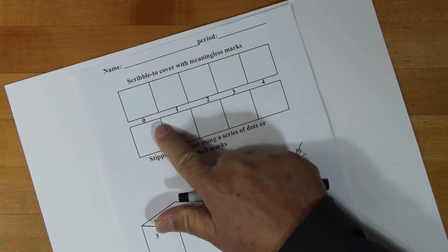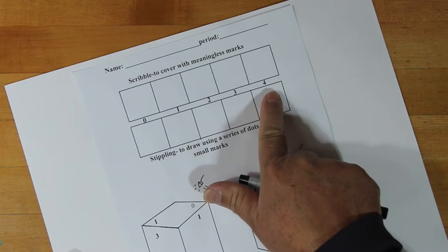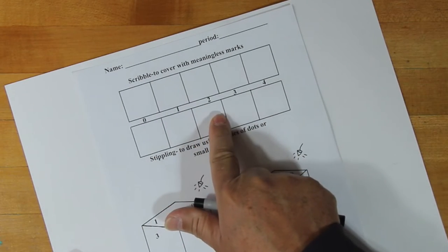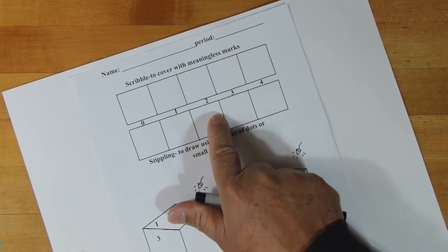Just like before, we're going to be looking at our value scale, and we're going to be using these two different techniques in order to create different values.